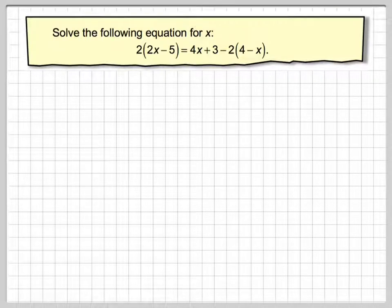Hi, in this video we're going to solve an equation which has brackets on two sides and is a little bit more complicated. So we've got to solve the following equation for x. It says 2 brackets 2x minus 5 is equal to 4x plus 3 minus 2 brackets 4 minus x.